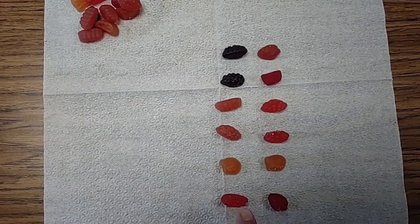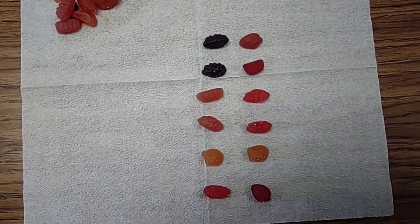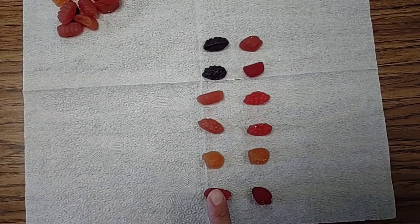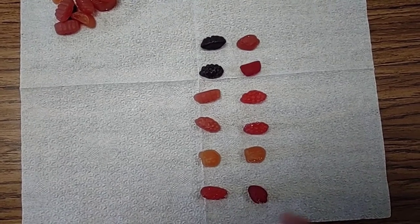So six rows of two. So six times two equals twelve. Because six plus six is twelve, or you can count by twos.